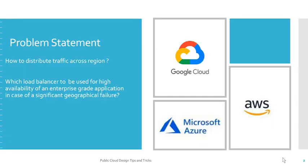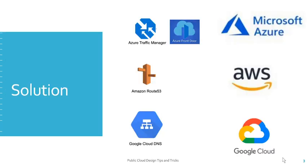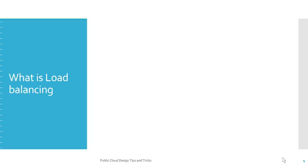Today's problem statement: how to distribute traffic across regions, and which load balancer to use for high availability of an enterprise-grade application in case of a significant geographical failure scenario. To realize this, we have Microsoft Azure Traffic Manager and Azure Front Door. AWS has Amazon Route 53, and Google Cloud has Google Cloud DNS service.